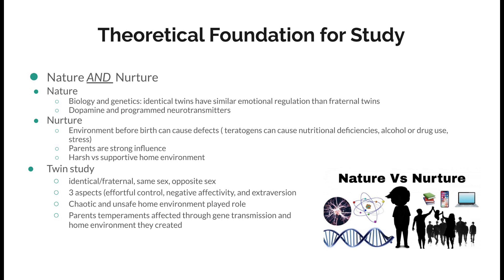One thing that supported this was the twin study. A group of identical and fraternal twins, same-sex twins, and opposite-sex twins were put through different tests to determine three aspects: effortful control, negative affectivity, and extroversion. The results found that a chaotic and unsafe home environment played a role. Another large thing that played a role was parents' temperament, which could be caused through gene transmission as well as the home environment they created for their children.